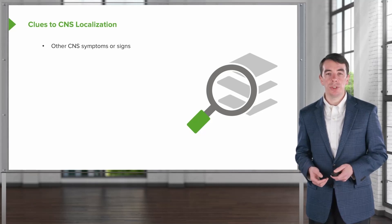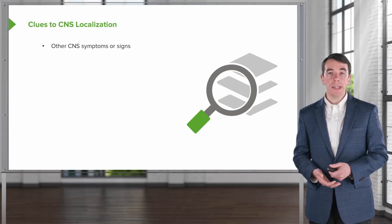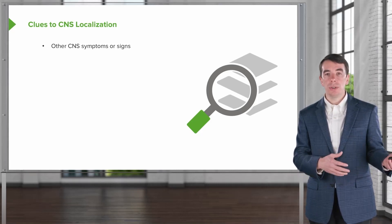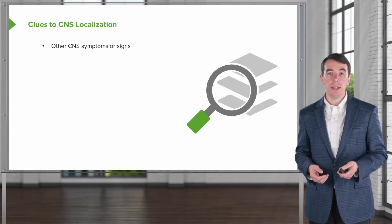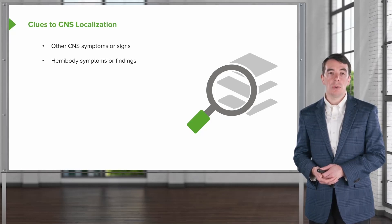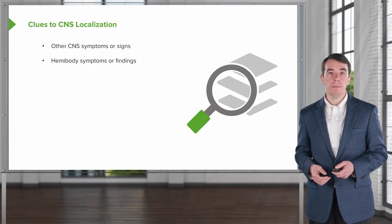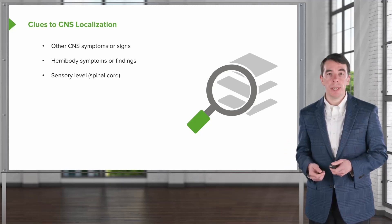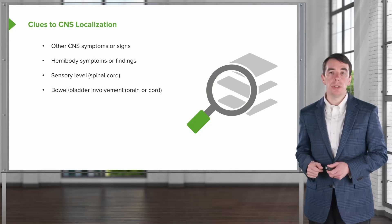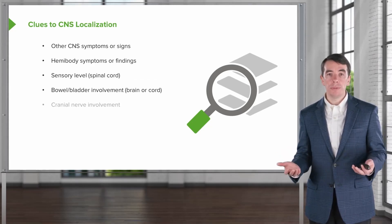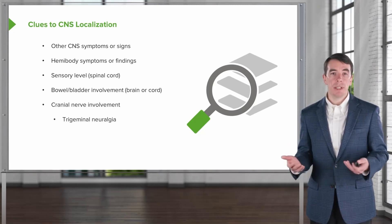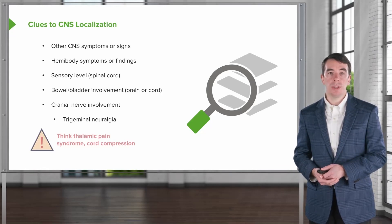Is this pain from the central or peripheral nervous system? Clues suggesting central nervous system localization include other CNS signs such as cerebellar dysfunction, cognitive dysfunction, or altered mental status. Hemibody symptoms or findings commonly arise from the brain subcortex or brain stem. A sensory level suggests spinal cord pathology — a myelopathy. Bowel or bladder involvement, particularly a spastic bladder, suggests a CNS process. Cranial nerve involvement suggests brain stem dysfunction — a good example is trigeminal neuralgia. Common conditions with CNS contribution include thalamic pain syndrome and cord compression.